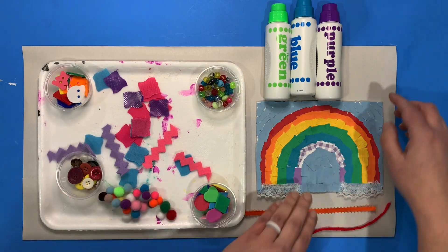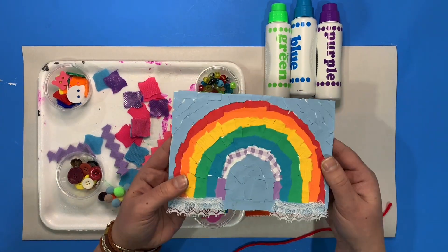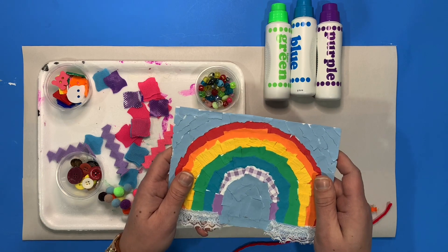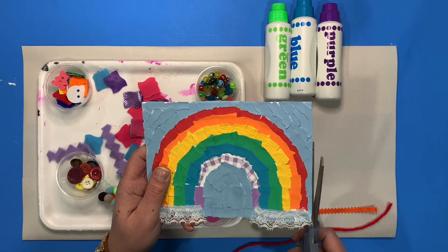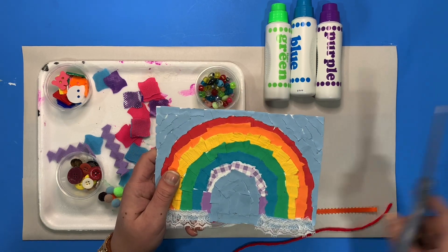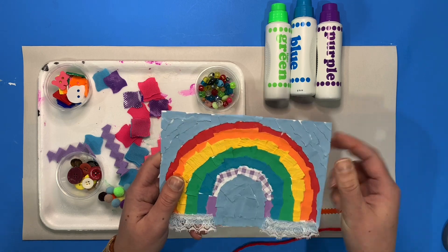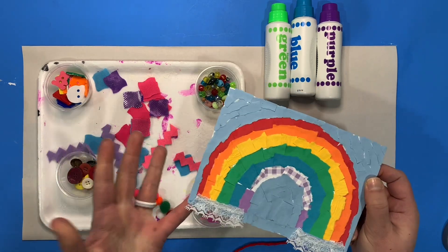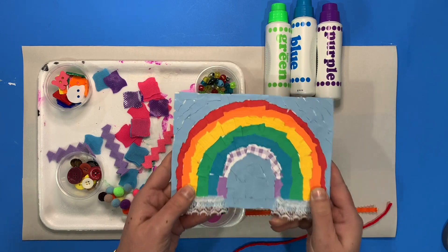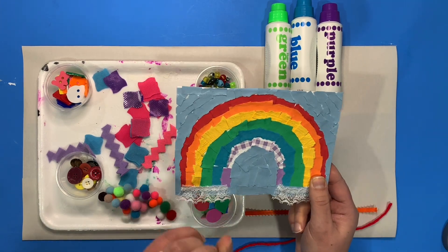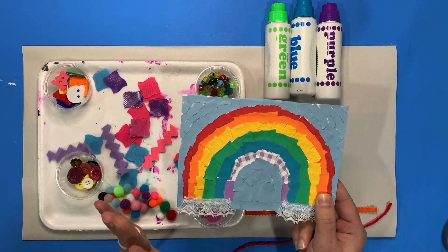Okay, so after all of the paper has been attached to our collage, I let it dry and then I took my scissors and I cut along the edge so that it was a really nice crisp clean edge. But you don't have to do that at all or you could even have a parent help. So this is your finished product or you could take it one step further.